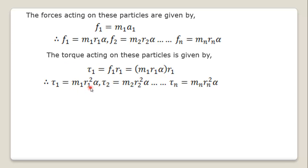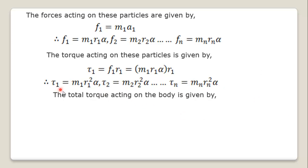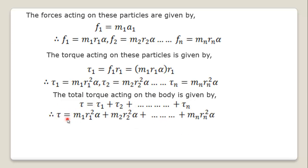We know that the relation for torque acting on these particles: torque on first particle equals F1·R1 = M1·R1·alpha·R1 = M1·R1²·alpha. Similarly, torque on the second particle is M2·R2²·alpha. For the nth particle, Tn = Mn·Rn²·alpha. The total torque acting on the rotating rigid body is the sum of torques on individual particles: torque = T1 + T2 + T3 + ... + Tn = m1r1²alpha + m2r2²alpha + ... + mn·rn²·alpha.